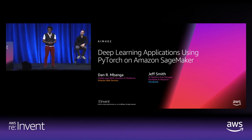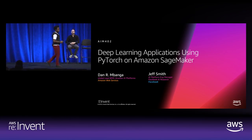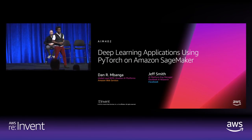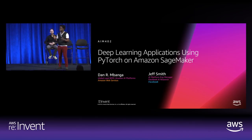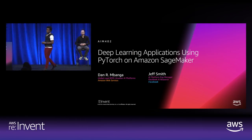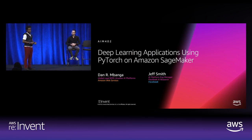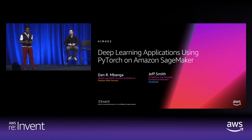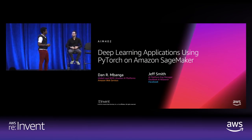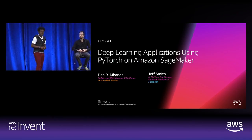Thanks to everyone for making it to the presentation on Friday morning. My name is Dan Banga. I lead a team of Business Development Managers at Amazon Web Services focusing on machine learning and deep learning platforms and services, specifically SageMaker and the ecosystem of products around it. It's my pleasure to present alongside Facebook today — my friend Jeff Smith from Facebook AI Research. The goal today is to talk in depth about the PyTorch developer experience on SageMaker.